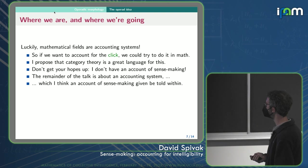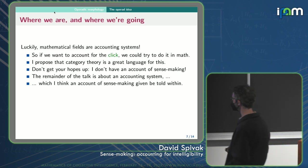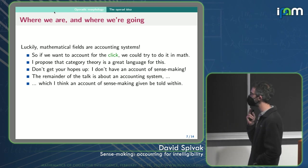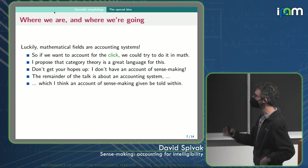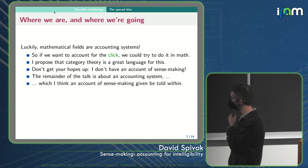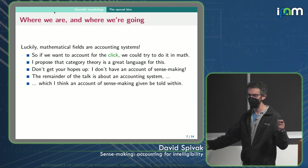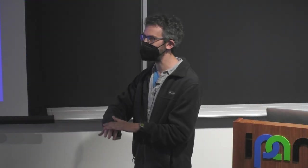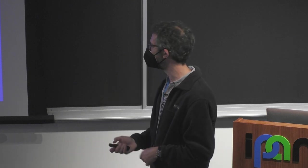So I think category theory is a great language for this. Now, don't get your hopes up, I do not have an account of sense making, so this remainder of the talk is about an accounting system in which I think an account of sense making might be told within. So this would be, I don't know how you account for sense making, I think it might live within this accounting system that's coming up.